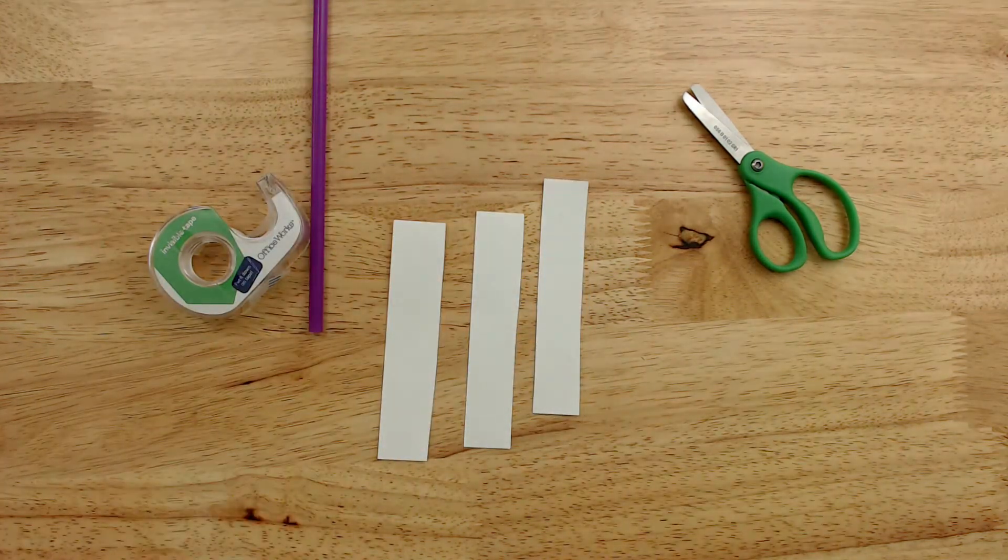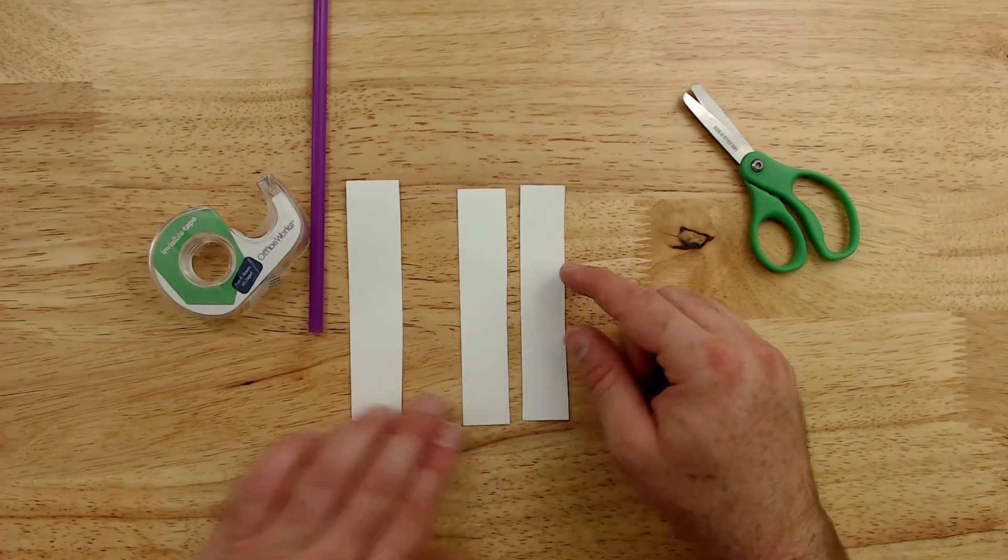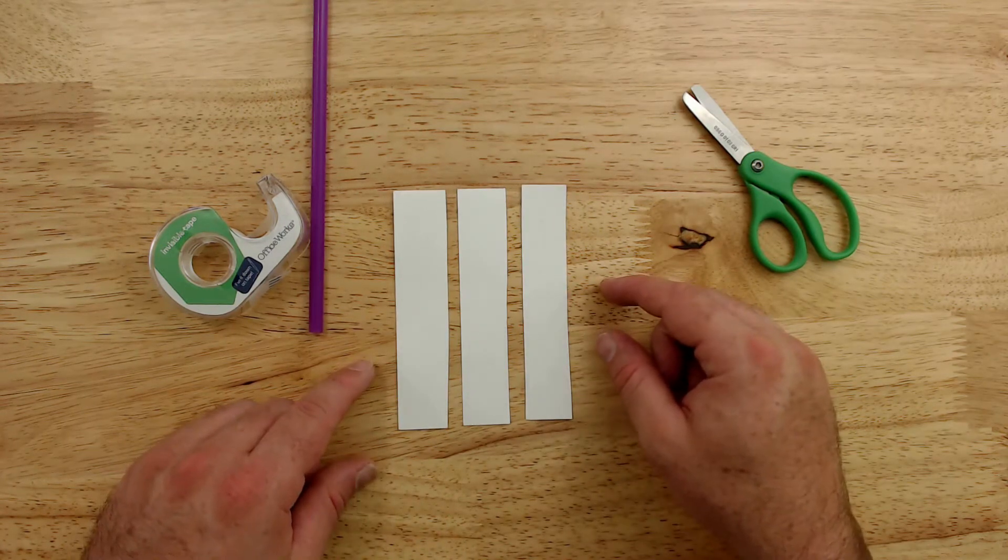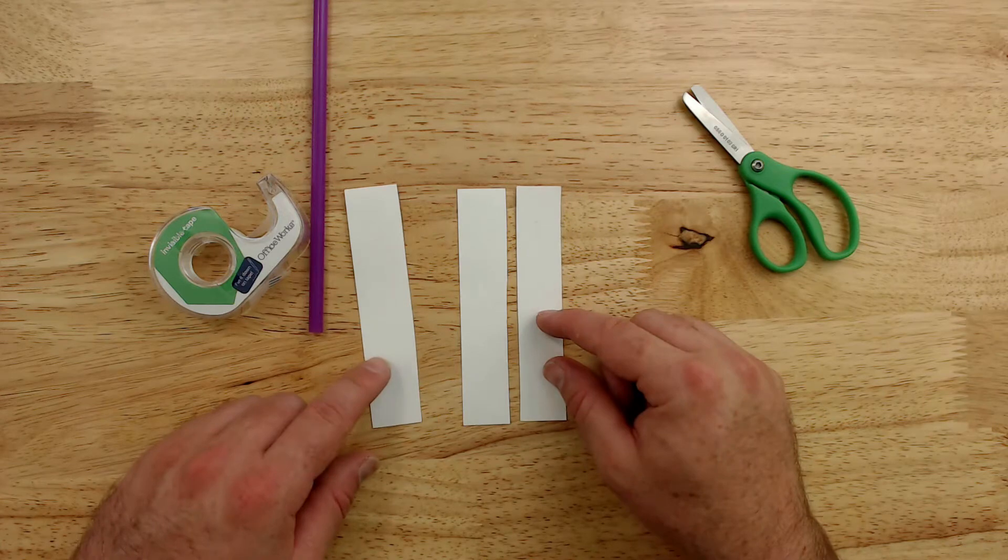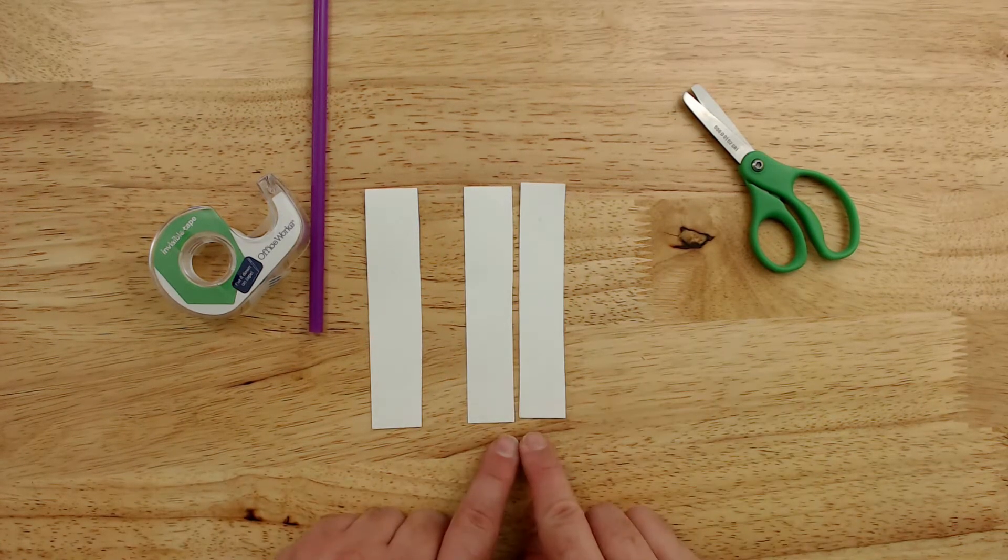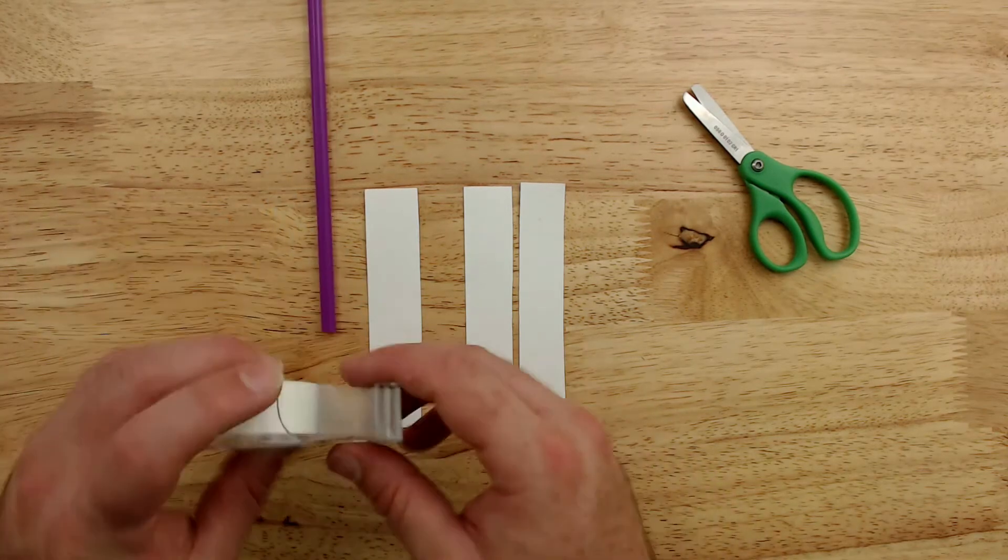Now all we need to do is tape them together. So first, I'm going to find the two strips that are closest in size, which looks like these two are the closest in width I should say, and I am going to tape those together.